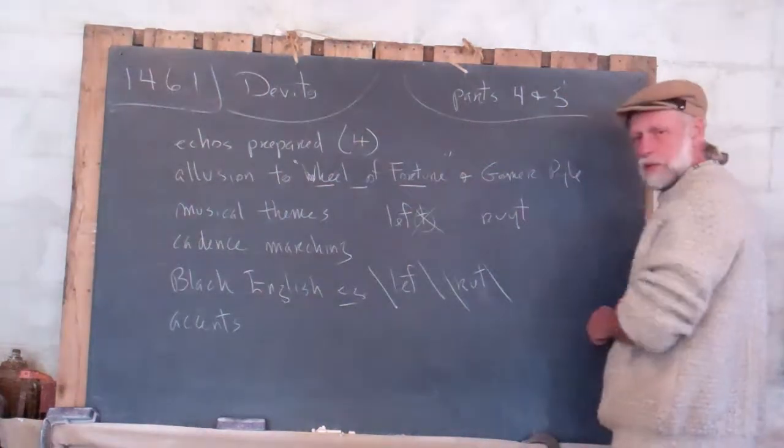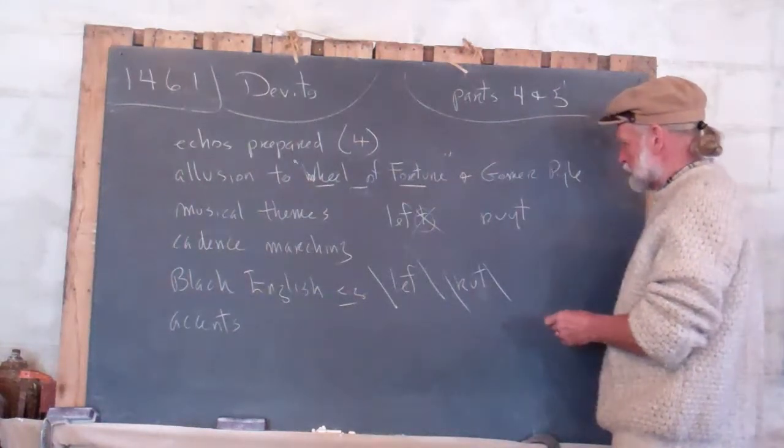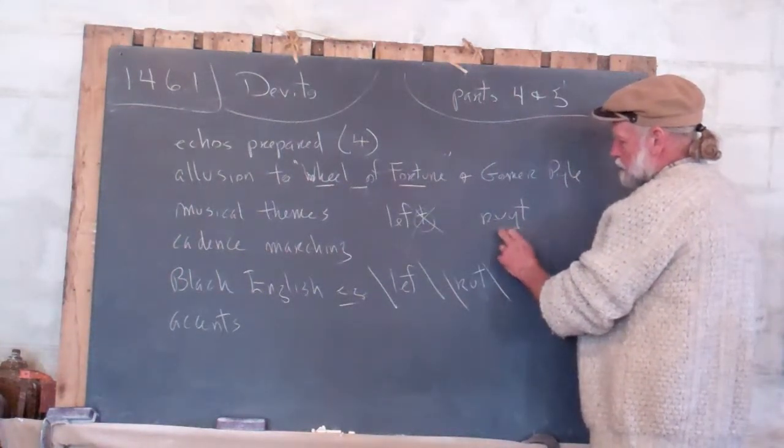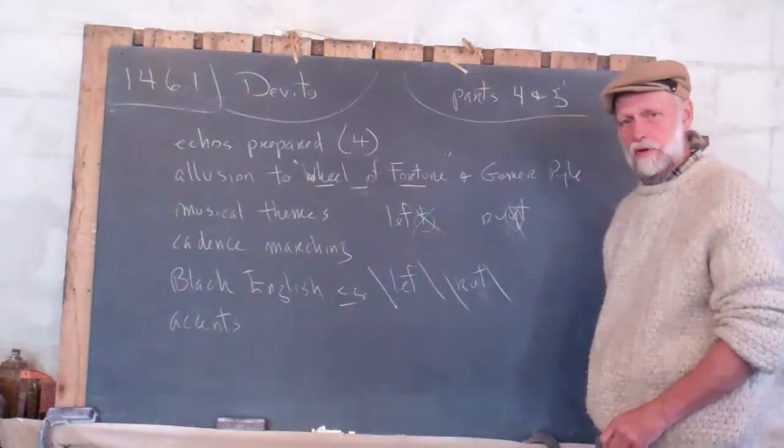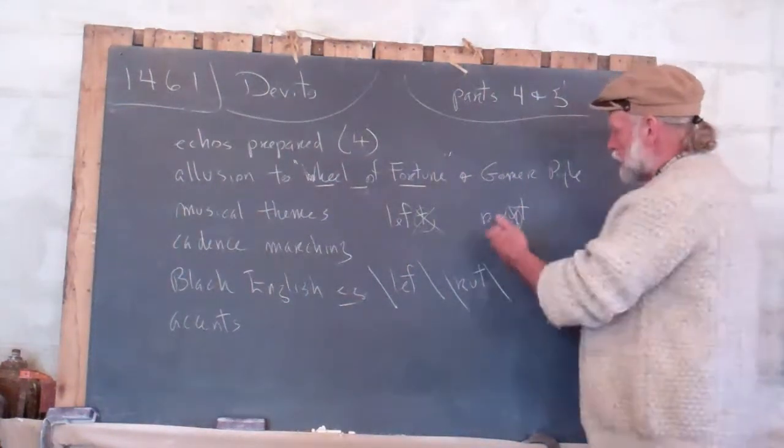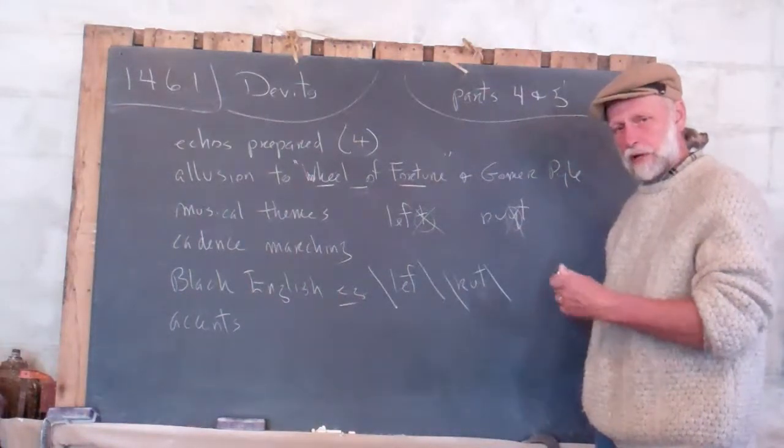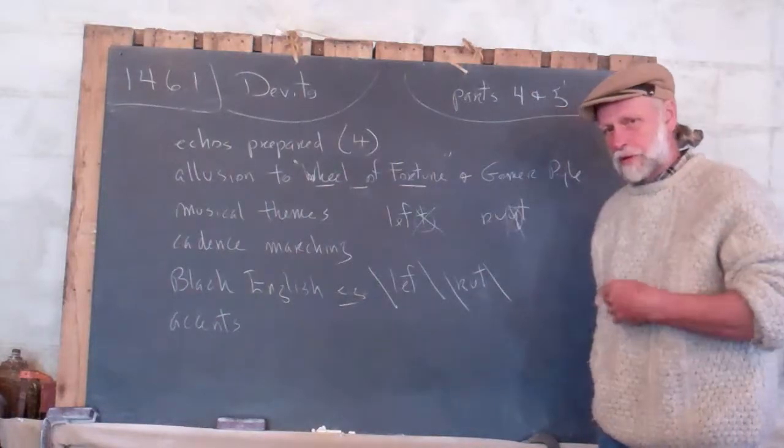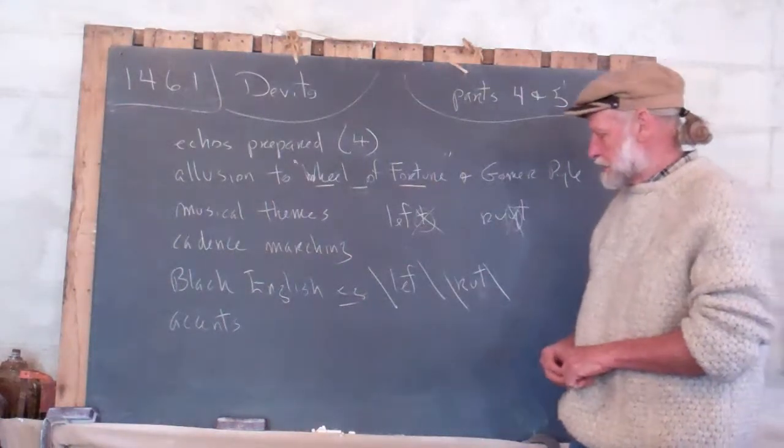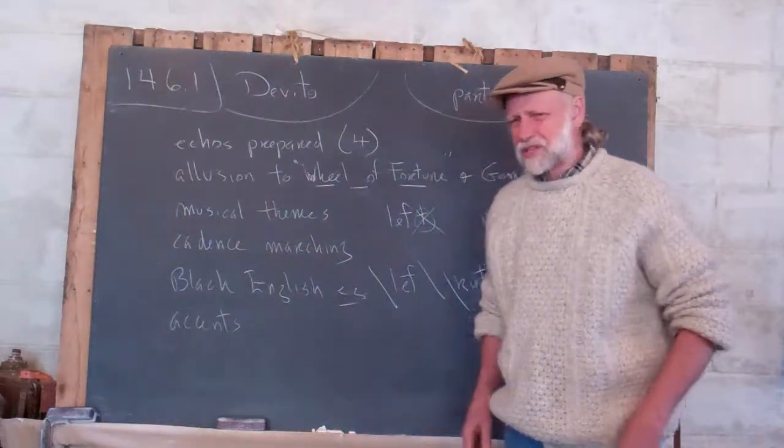Right is the way that would be spoken in standard English, I guess you'd call it. But when you've got a diphthong, the second sound is often left out, so you come up with Ra, Ra, Lef, Lef, Lef, Ra, Lef. And you hear that, as an example of Black English, not very strong, but a little bit.